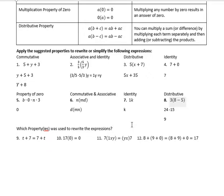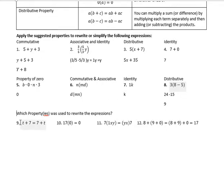Finally, the last part asks which property or properties was used to rewrite the expression. We had t plus seven and switched to seven plus t. That's the commutative property, because we changed the order. The next one says 17 times zero is zero. That's the multiplication property of zero.